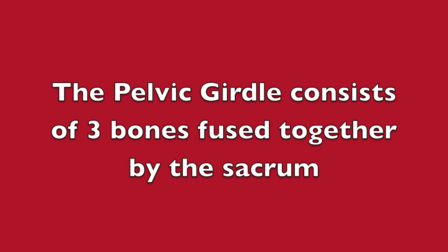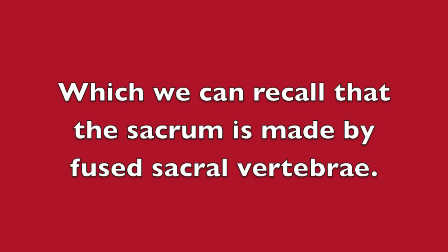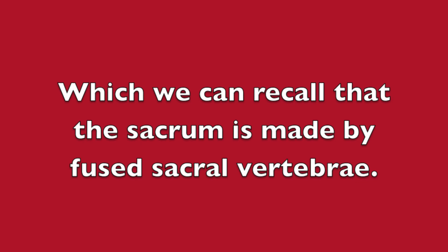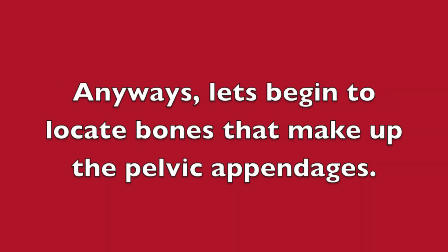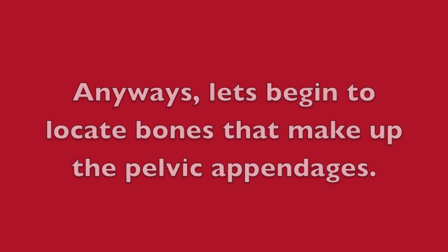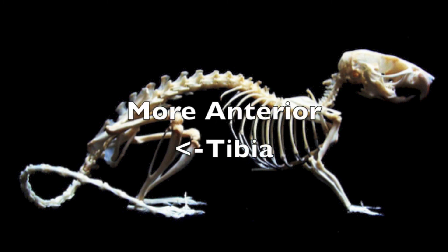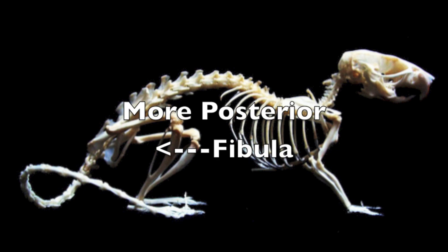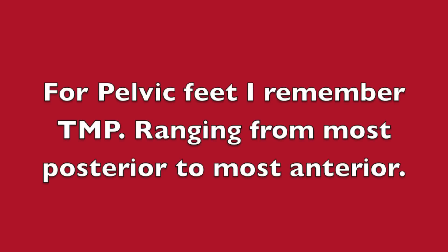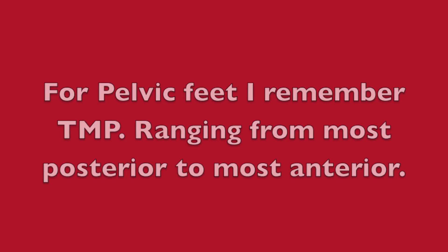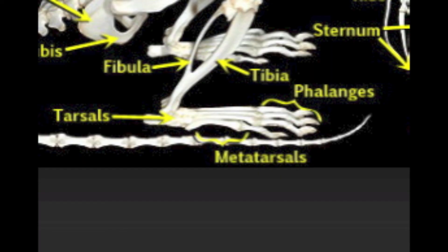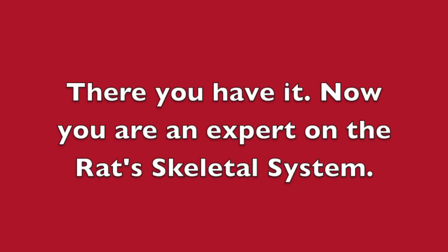The pelvic girdle consists of three bones fused together by the sacrum, which is made by fused sacral vertebrae. The bones of the pelvic appendages are the femur, the tibia (which is more anterior), and the fibula (which is more posterior). For the pelvic feet, remember TMP — ranging from most posterior to most anterior: tarsals, metatarsals, and phalanges. There you have it — now you're an expert on the rat's skeletal system.